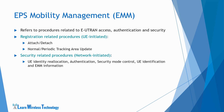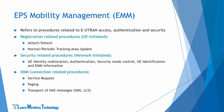Next are the security related procedures. These are mostly network-initiated procedures such as UE identity relocation, authentication, security mode control, UE identification, and EMM information. EMM connection related procedures are used to support the connection of the UE with the network, also referred to as EPS connection management or ECM. This includes procedures such as service request, which is initiated by the UE to establish a NAS signaling connection with the network. Paging is initiated by the network for UEs in idle state to indicate that there is incoming data and the UE needs to wake up to initiate a connection request. The procedures also include transport of NAS messages such as SMS or other application data such as LCS.